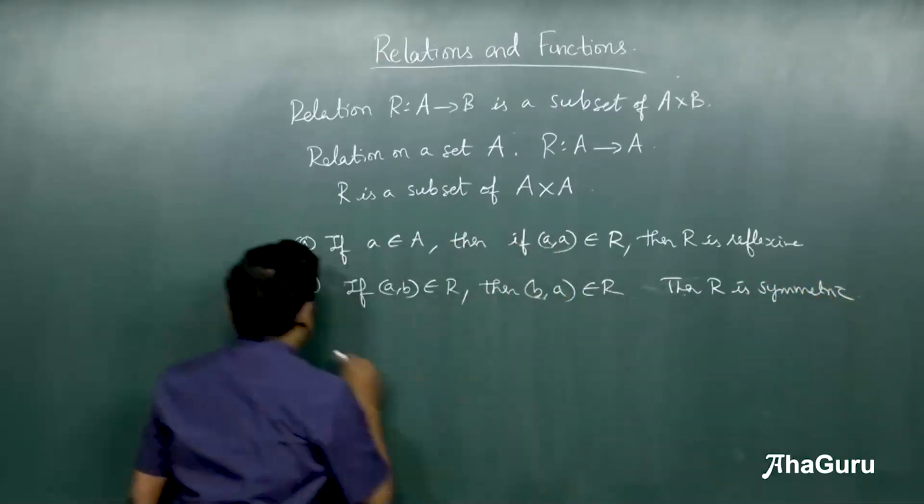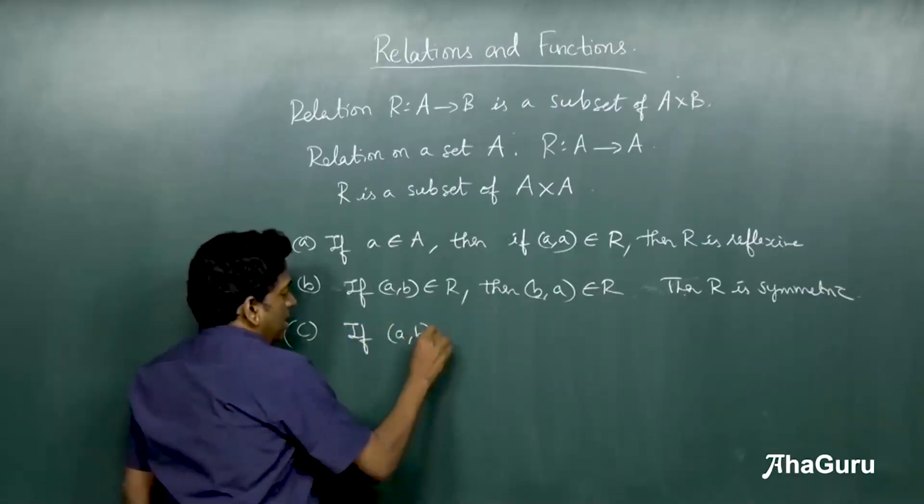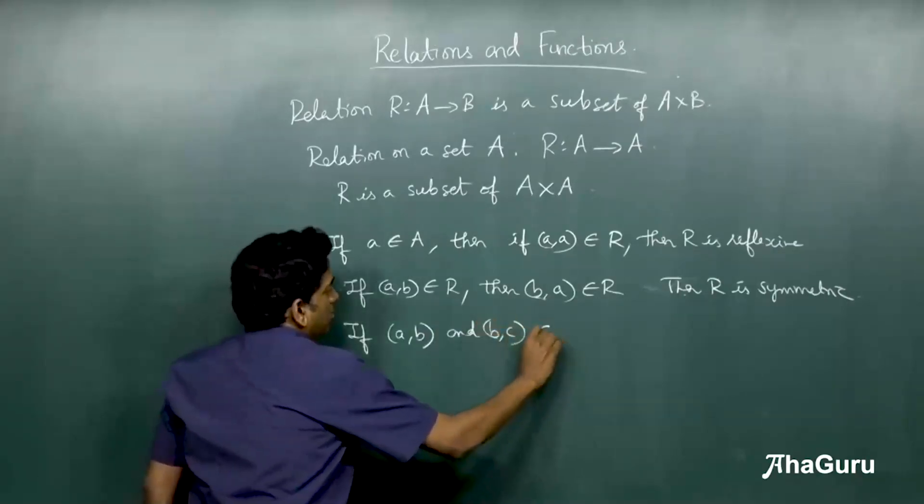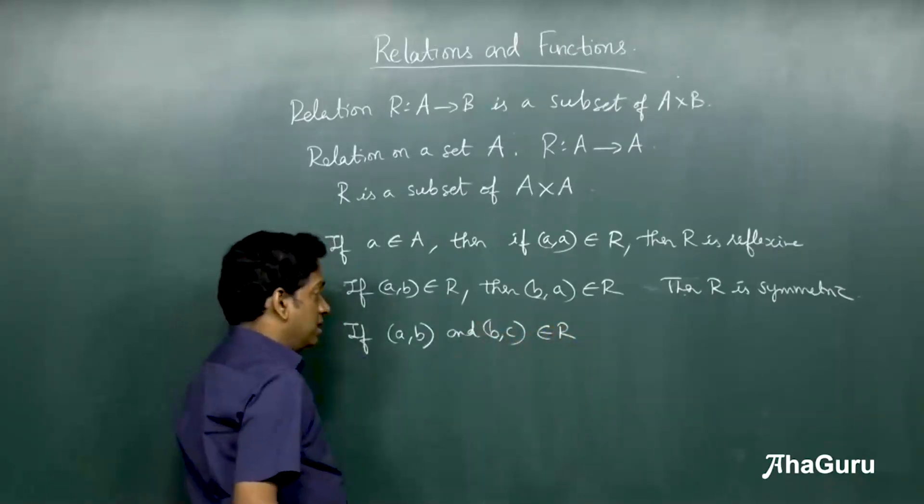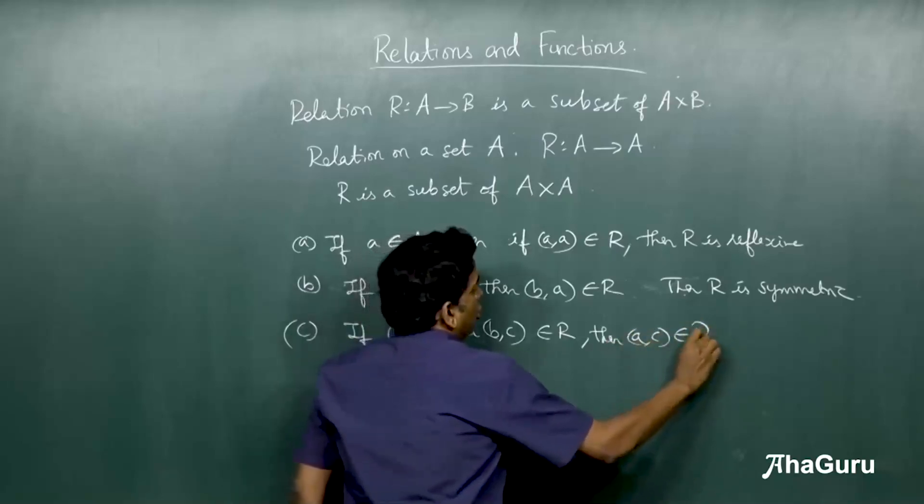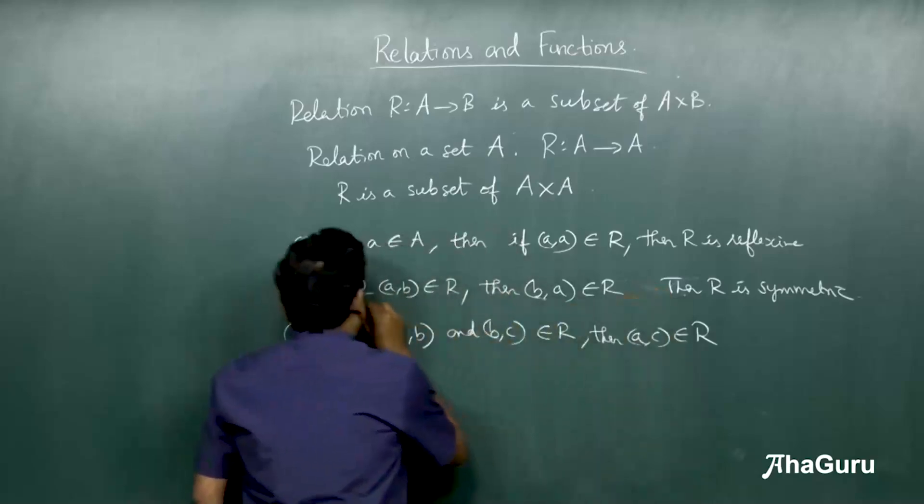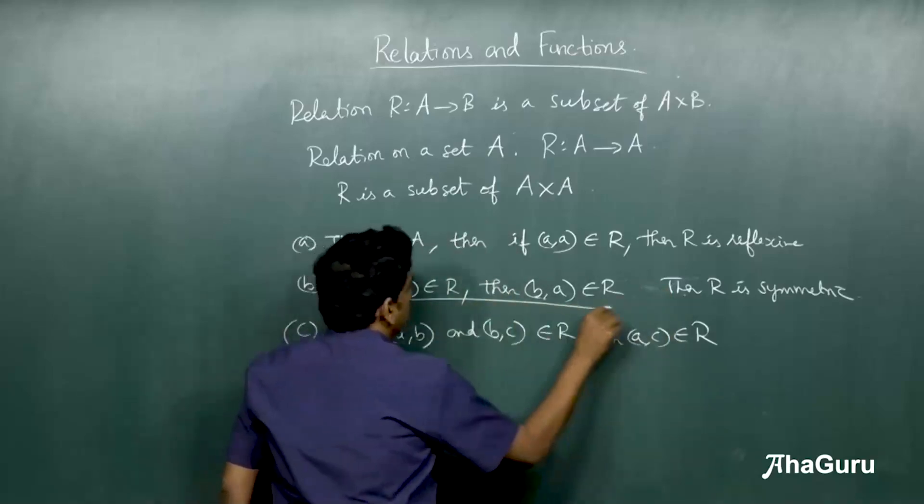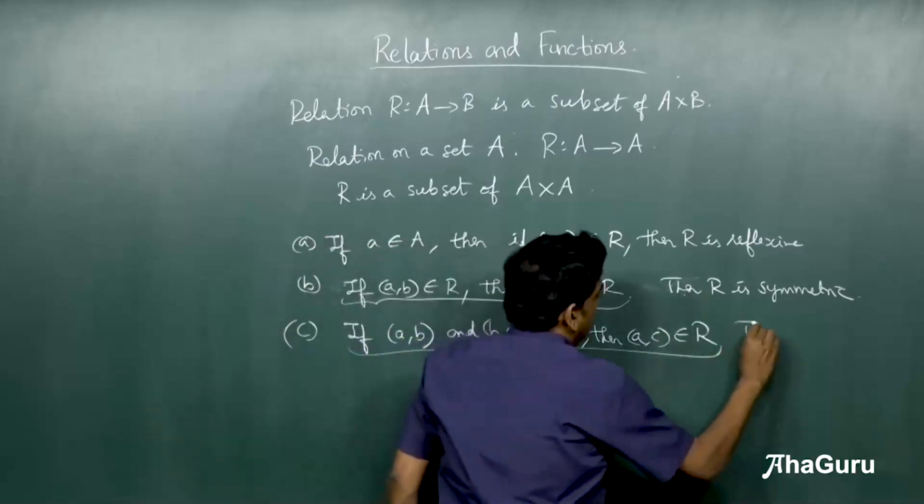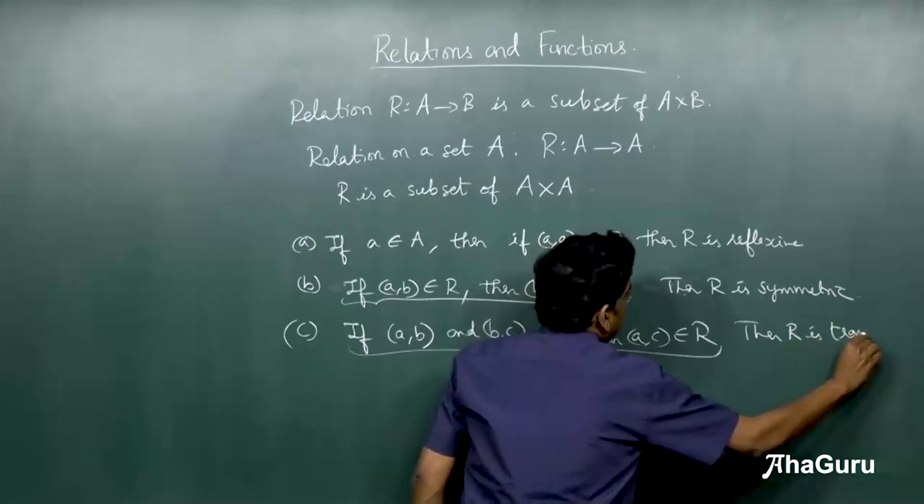And finally, we have, if AB and BC belong to R, then AC belongs to R. If this condition is satisfied, then R is transitive.